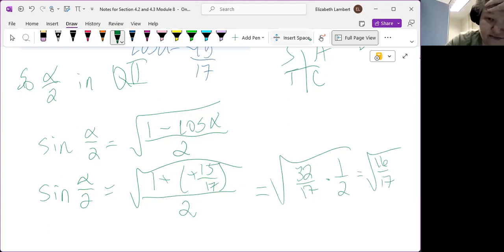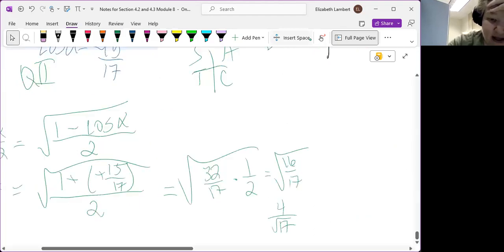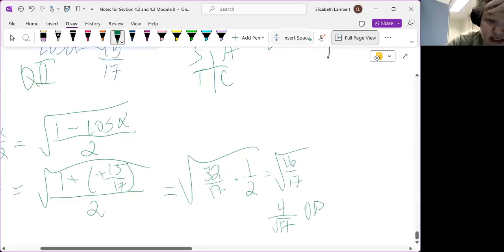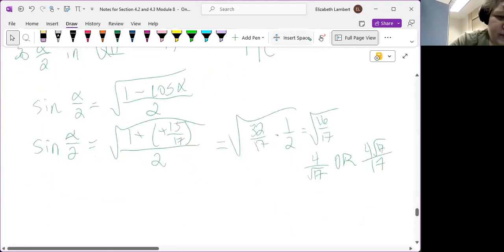Which, I mean, we could simplify this to be 4 over the square root of 17. We could rationalize it, but I think 4 over the square root of 17 should also be good. That would be the rationalized version.